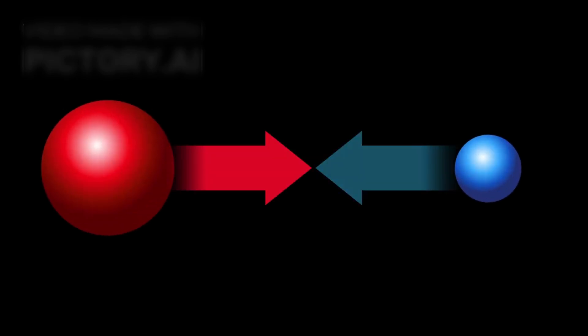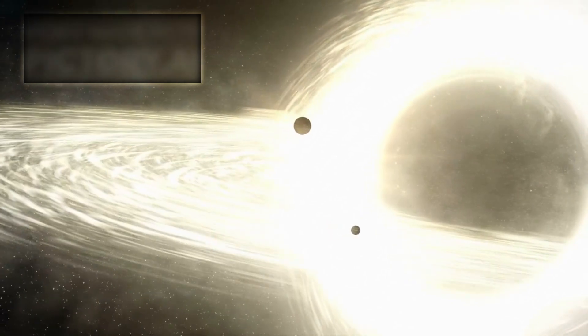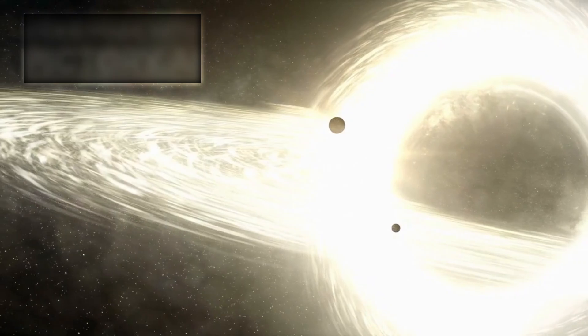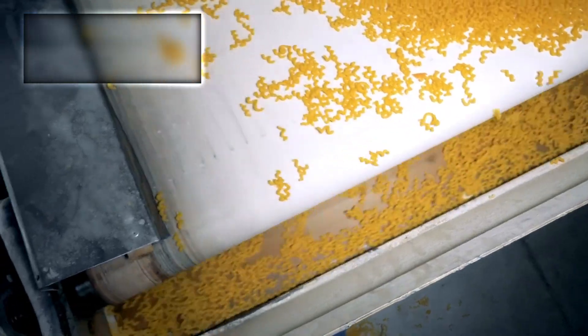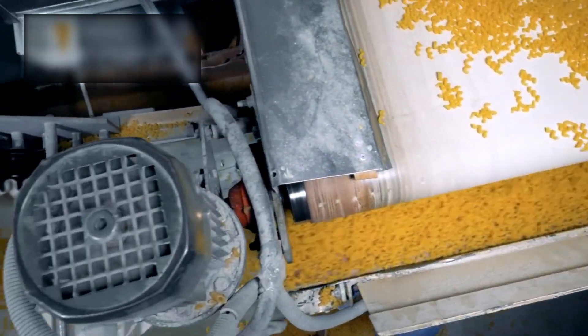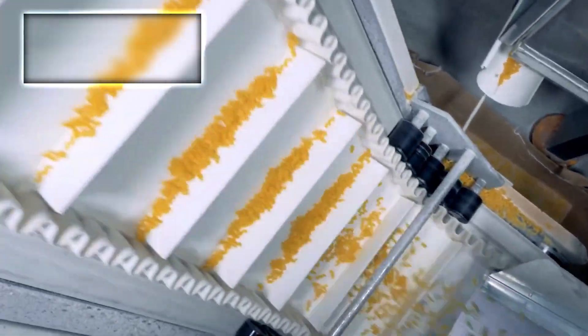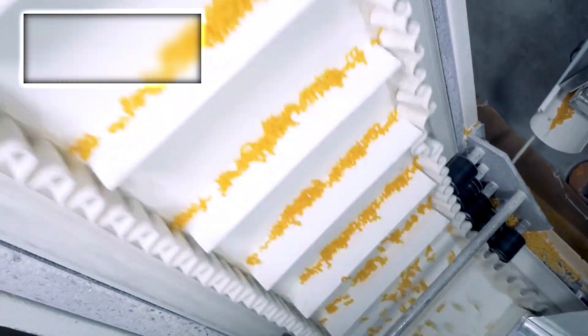One of the most fascinating processes associated with this boundary is spaghettification. As an object approaches the event horizon, the gravitational difference between its near side and far side becomes extreme. This tidal stretching can elongate the object into a long, thin strand, much like spaghetti, before it's torn apart and consumed by the singularity.